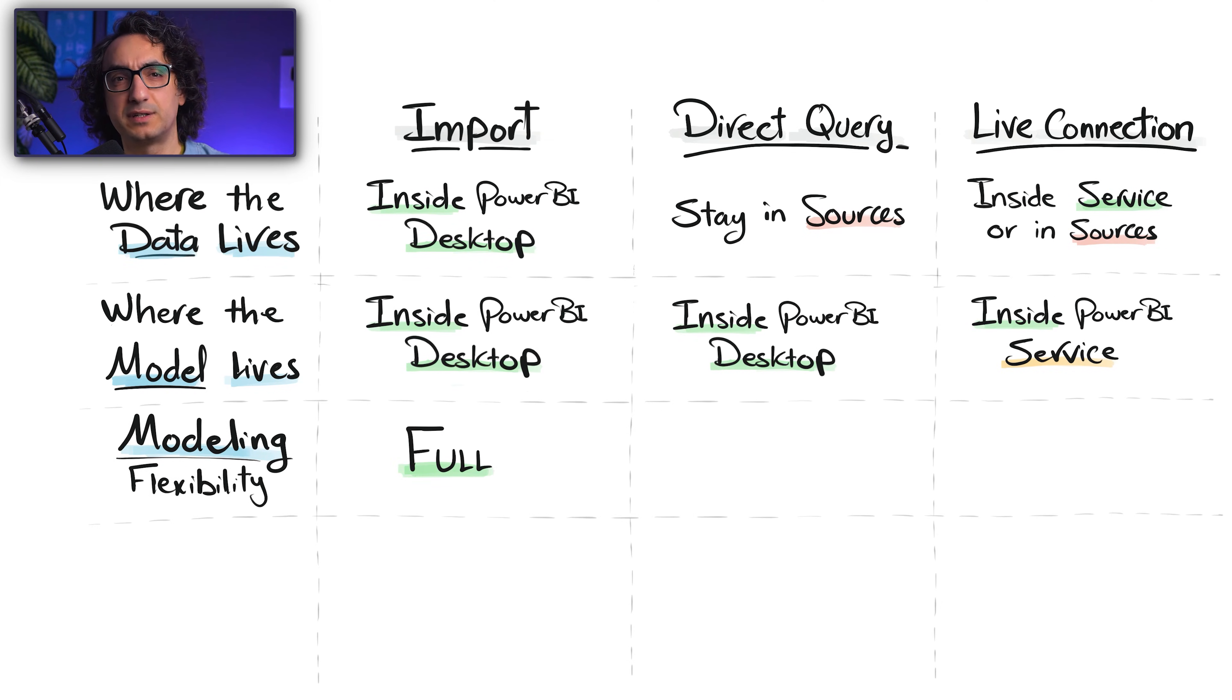You have all the features to manipulate anything. With Direct Query, the flexibility is limited because Power BI cannot change the data that it doesn't own. And with Live Connection, there is no flexibility at all about the modeling because everything is frozen and fixed in the service. You can only build the visuals.